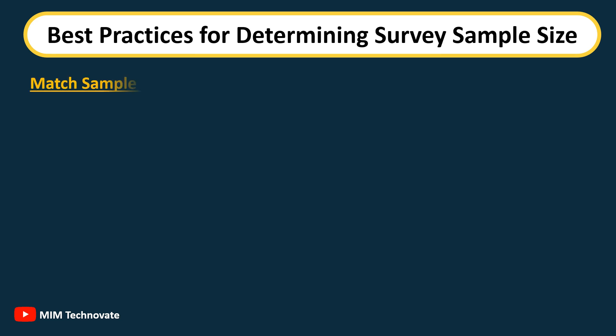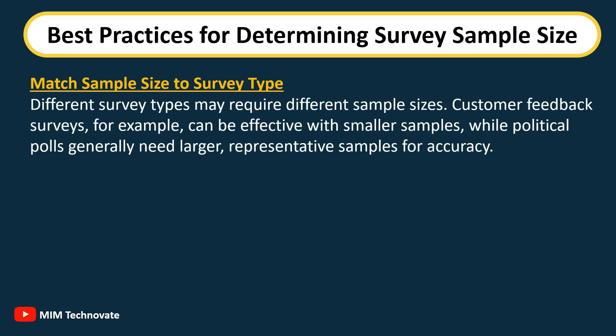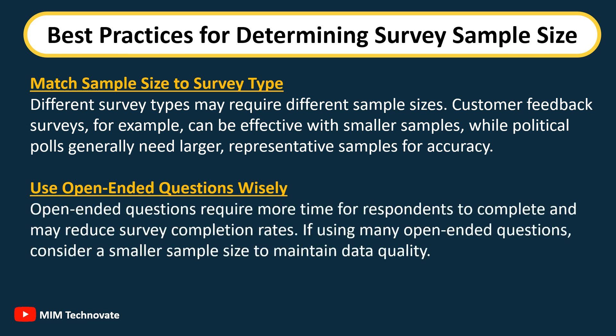Match sample size to survey type — different survey types may require different sample sizes. Customer feedback surveys, for example, can be effective with smaller samples, while political polls generally need larger, representative samples for accuracy. Use open-ended questions wisely: open-ended questions require more time for respondents to complete and may reduce survey completion rates. If using many open-ended questions, consider a smaller sample size to maintain data quality.